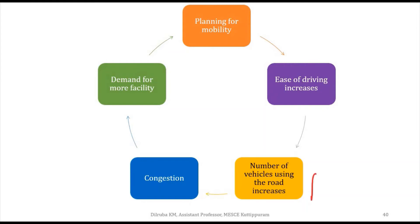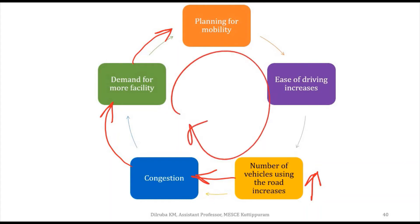What happens is: we plan for mobility, driving becomes easy, the number of vehicles on the road increases, which leads to congestion. When congestion occurs, there is demand for more facilities, so we plan for mobility again — extending road width, providing more parking — and so forth. This is a non-ending cyclic process. The more mobility we provide, the more congestion builds, and we have to provide more mobility facilities again.